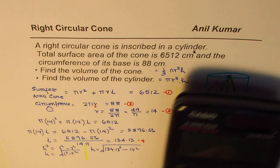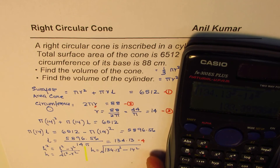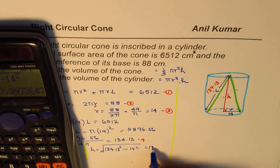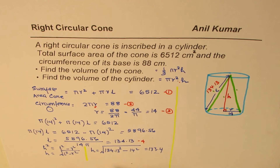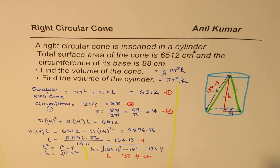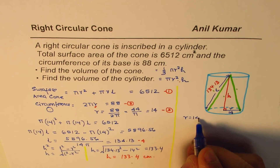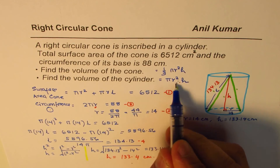Computing: √(134.13² − 14²) = √(17990.85 − 196) = √17794.85 ≈ 133.39, which we round to 133.4 centimeters. So we have r = 14 cm and height ≈ 133.4 cm — these two values are required to find the volume.